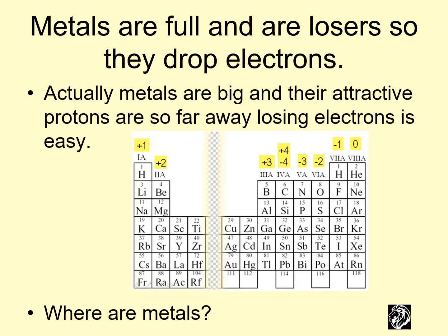Let's look at metals. Metals are so full of electrons that they lose them, they drop their electrons. They're losers. Metals are big and their attractive protons are so far away that losing electrons is easy.